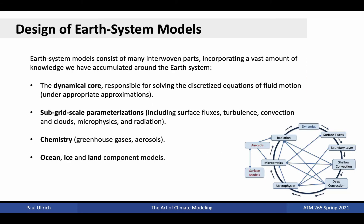Earth system models consist of many interwoven parts and incorporate a vast amount of knowledge that we have accumulated around the Earth system. The process of discretization enables us to represent the whole atmosphere on a computing system, but leads to a delineation between resolved and unresolved scales. At the resolved scale, dynamics is captured by the dynamical core, which solves the discretized equations of fluid motion under appropriate approximations. At the unresolved scale, we have subgrid scale parameterizations, which capture processes such as surface fluxes, turbulence, convection and clouds, microphysics, and radiation. Additionally, we have other components of Earth system models that were not discussed in detail in this course, including atmospheric chemistry modules.